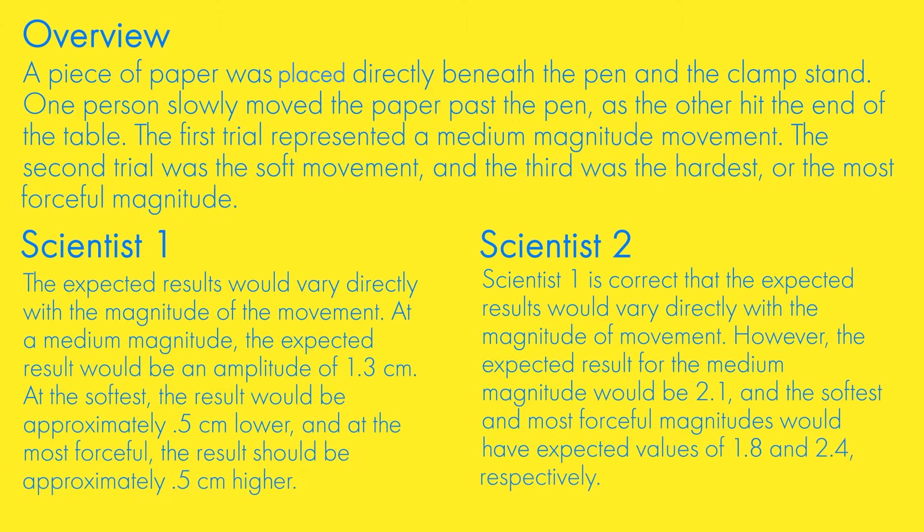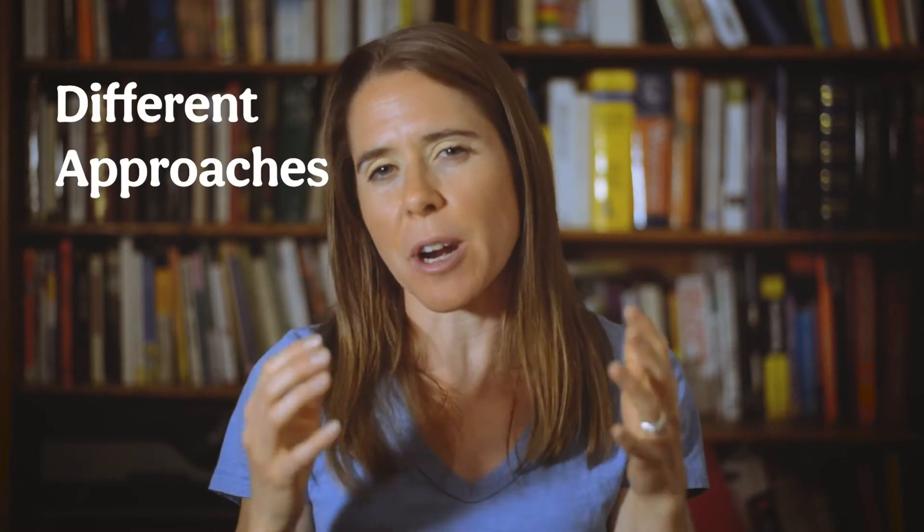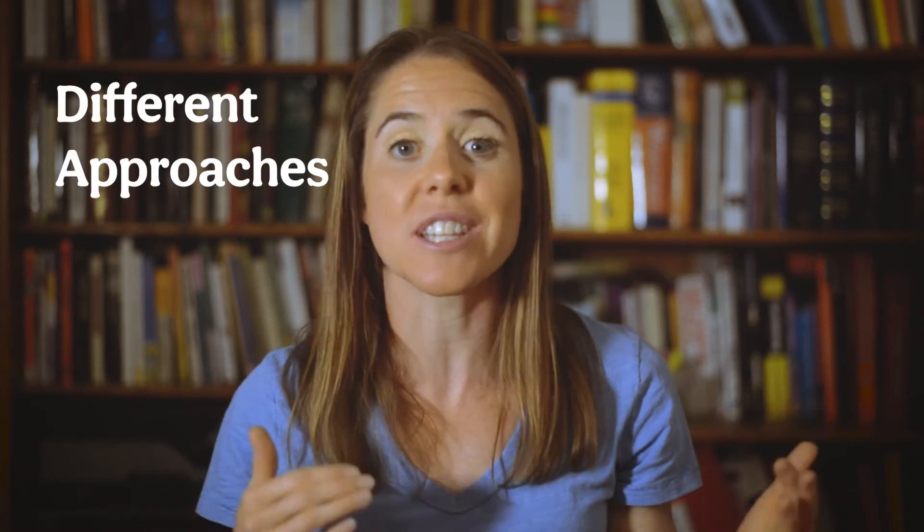This section looks different because it's usually in paragraph form, as opposed to having a bunch of charts, diagrams, and tables with other data. You can also recognize it because it will have a structure like: an overview, then Scientist 1 with information, then Scientist 2 — or sometimes Student 1, Student 2, Student 3. It's called dueling scientists because they're approaching an experiment or information from different angles and have different theories.